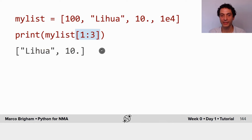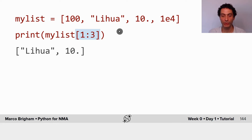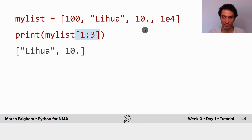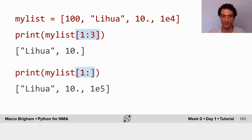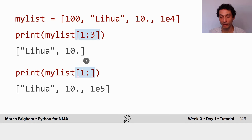This slicing notation is very interesting. It says you want to print starting from element one of the list, up to but not including element three — so elements at index zero, one, two, three — printing from element one up to but not including element three. This other notation starts at element one, and the colon indicates up to the end, so it goes from element one to the end of the list.